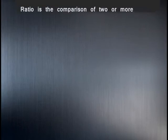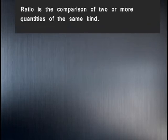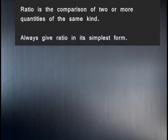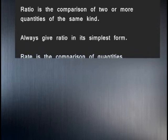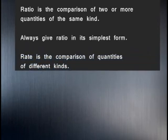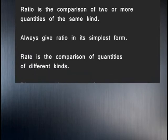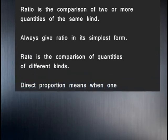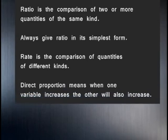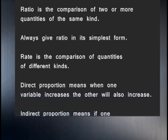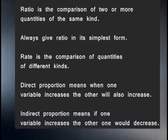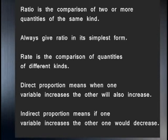Let's now recap what we've learned today. Ratio is the comparison of two or more quantities of the same kind — always give ratio in its simplest form. Rate is the comparison of quantities of different kinds. Direct proportion means when one variable increases, the other will also increase. Indirect proportion means when one variable increases, the other decreases. This brings us to the end of today's lesson. Goodbye.